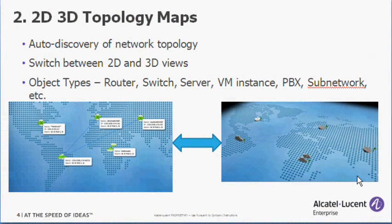The 2D-3D Topology Maps feature provides a powerful method for visualizing network topology in a variety of ways. One of the features included is the ability to switch between two-dimensional and three-dimensional views of the same network view.